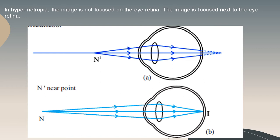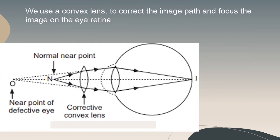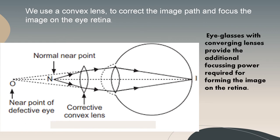In hypermetropia, the image is not focused on the retina but behind it. This vision problem occurs when light rays entering the eye focus behind the retina rather than directly on it, because the eyeball is shorter than normal. A convex lens is used to correct hypermetropia — eyeglasses with converging lenses provide the additional focusing power required to form the image on the retina.